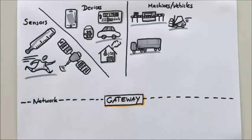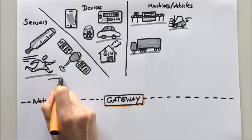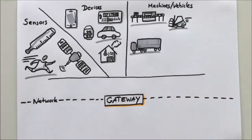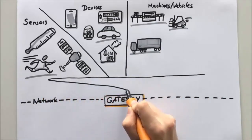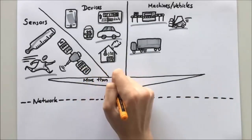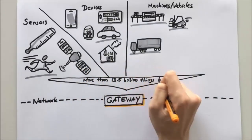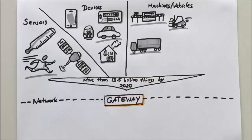As more and more sensors will follow to connect more devices, machines, vehicles, and so on, we can expect these data storages to become larger over time. Gartner, for instance, predicts about 13.5 billion connected things by the year 2020.